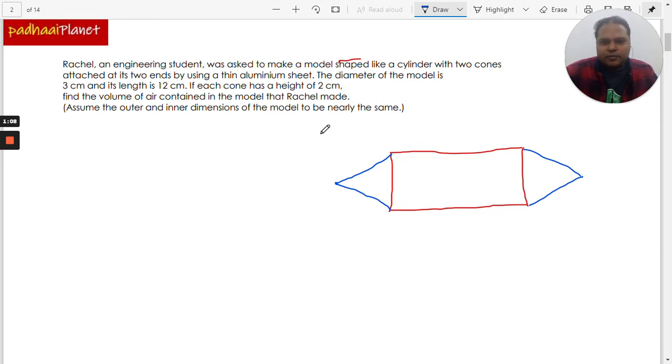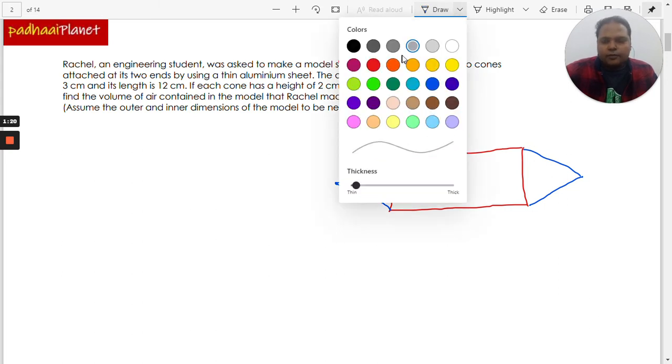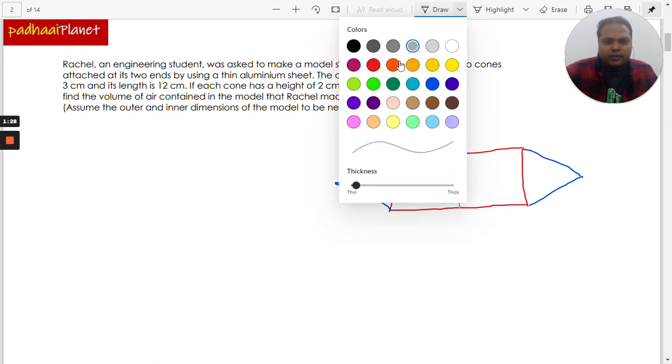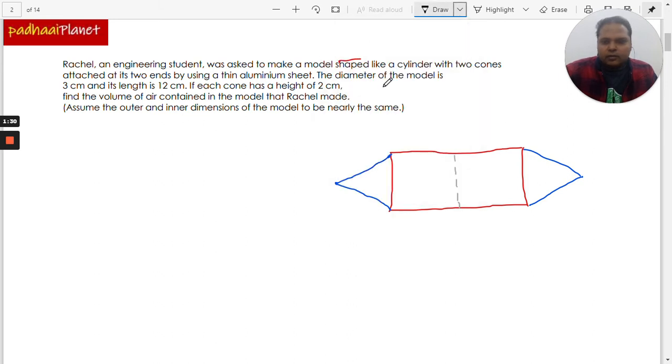Now what it's saying is that the diameter of the model is 3 centimeters. So that means the diameter of the cone as well as of the cylinder is 3 centimeters. We can denote the diameter in the form of this gray line, and this is 3 centimeters.